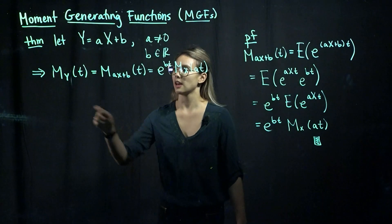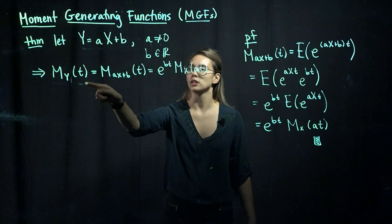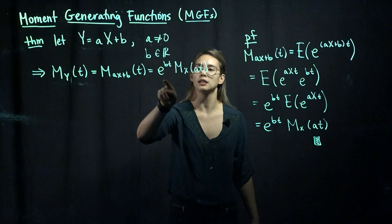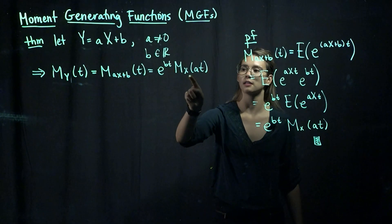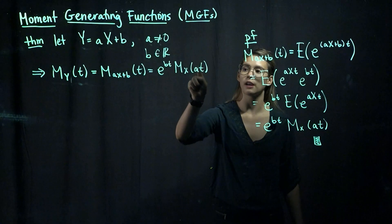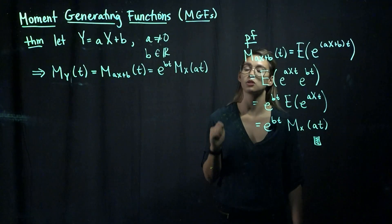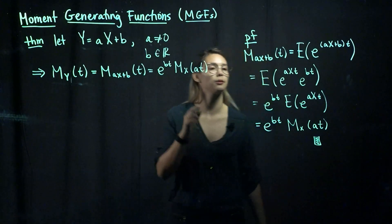And in fact, that moment-generating function for y is going to be e to the bt times the moment-generating function for x, and instead of having just t in here, we're going to have a times t. So let's see why that works out.